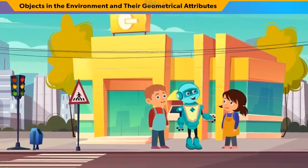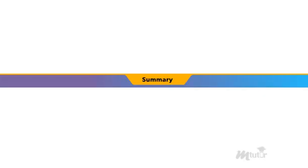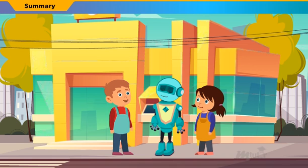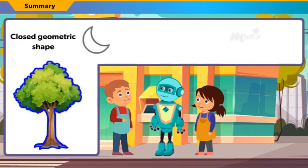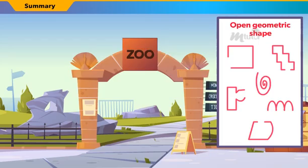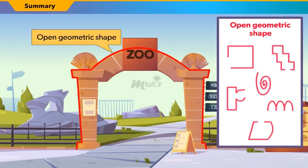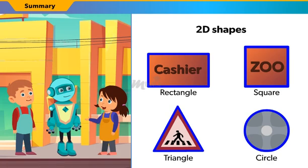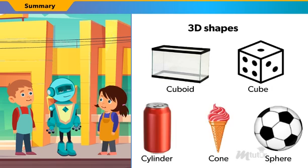Bella and Ben, can you now recall what we have learnt? Today, we learnt that there are different geometric shapes. When an object or a shape is connected at both ends, it is considered a closed geometric shape. When an object or shape is not connected at both ends, it is an open geometric shape. Also, two-dimensional shapes are flat figures with length and height but no width. Unlike two-dimensional shapes, three-dimensional shapes have width, height, and length.